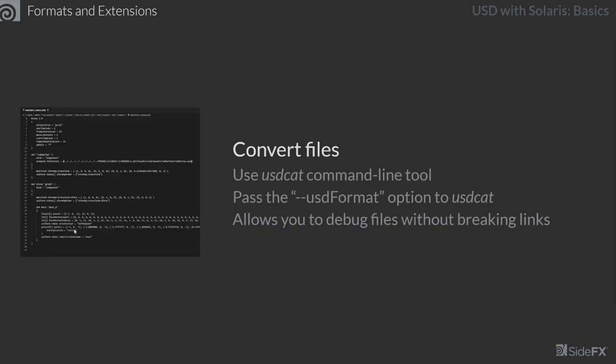Let's talk about the .usd file format and converting between binary and ASCII. Using command-line tools, specifically usdcat, you can pass an option to switch between binary and ASCII formats. This is very useful — if a file path is downstream for another artist or department, you can temporarily convert it to ASCII to verify the contents, then switch it back to binary without breaking any downstream links.